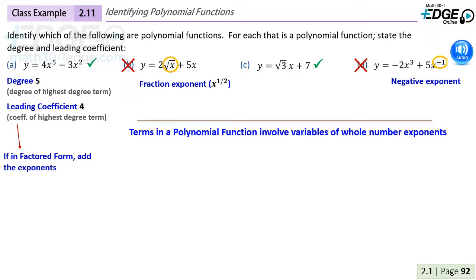It's worth noting that sometimes you may be given a polynomial function in a factored form, and so you won't necessarily see the largest exponent.